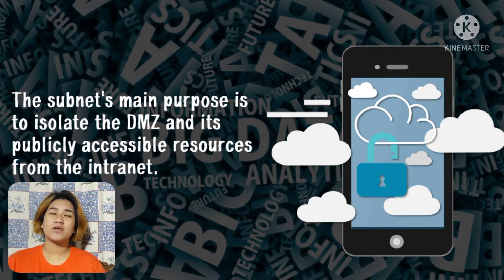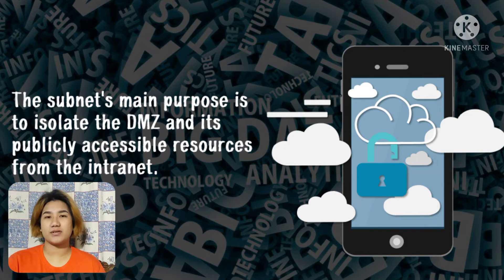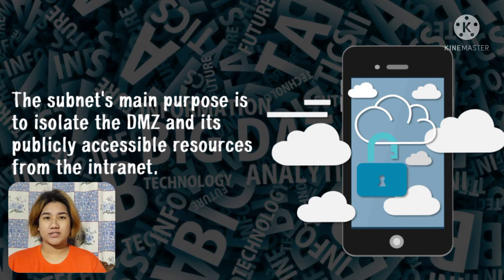This is especially true when a properly configured firewall is combined with the use of private IP addresses on one or both of these subnets. Even if the firewall itself is compromised, an attacker won't be able to access the intranet.